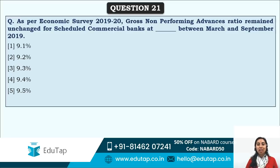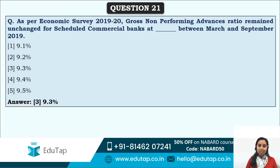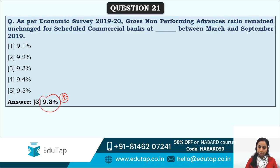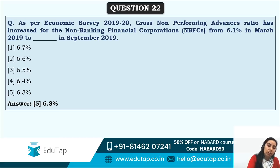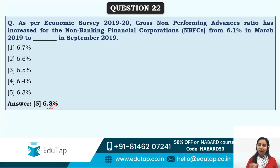Gross NPA advances ratio remained unchanged for scheduled commercial banks at 9.3% between March and September 2019. For NBFCs, gross NPA increased from 6.1% in March to 6.3% in September — related to the IL&FS crisis. Despite this, NBFCs continue to lend significantly to entrepreneurs. Indian economy witnessed a banking credit growth of 7.1% on a year-on-year basis as of December 20th.